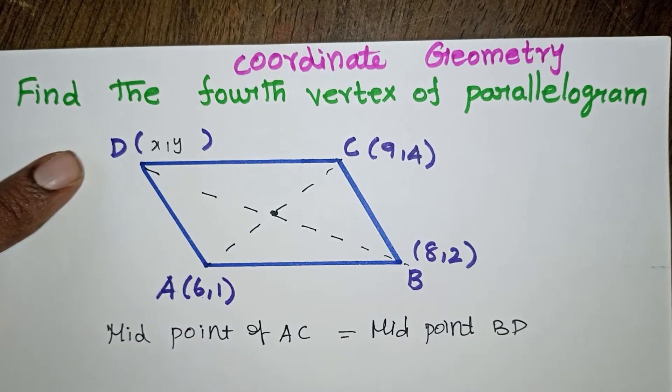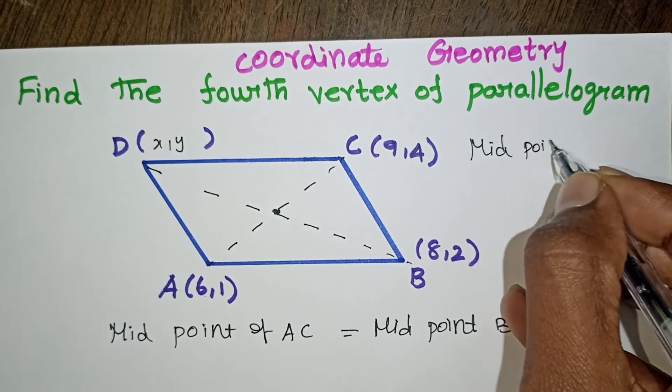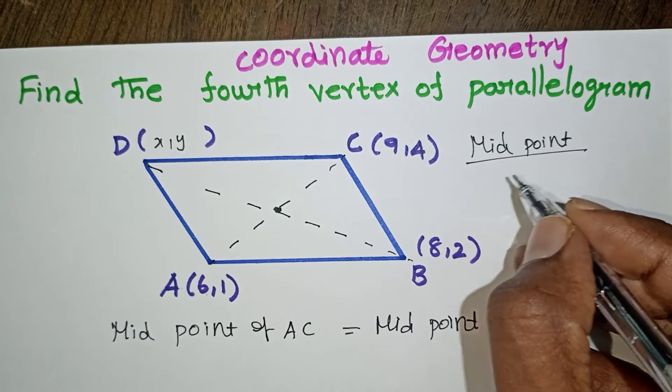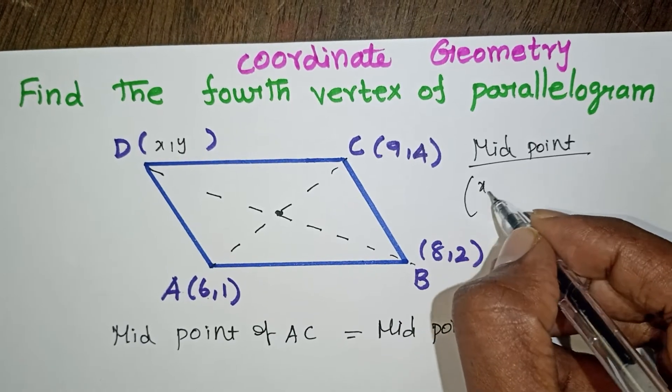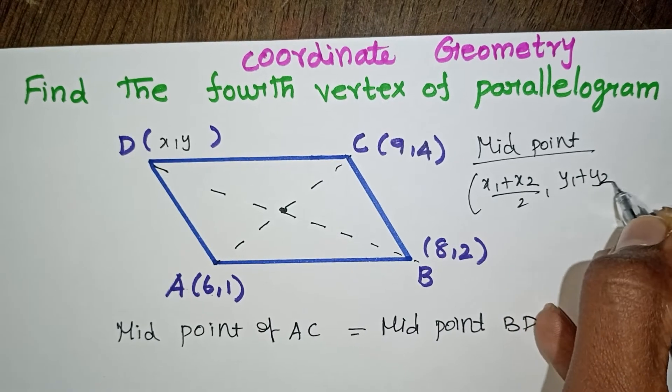The midpoint formula is: whenever you want to find the midpoint for any two points X1, Y1 and X2, Y2, the midpoint will be X1 plus X2 by 2 comma Y1 plus Y2 by 2. This is the basic formula.